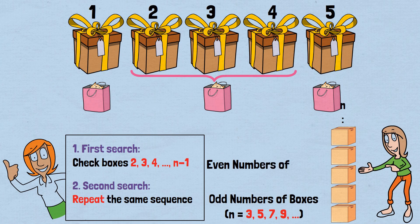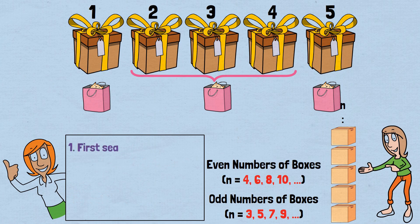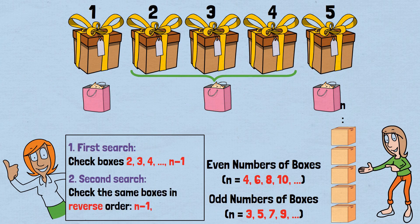For even numbers of boxes, n equals 4, 6, 8, 10, the strategy requires a subtle modification. 1. First search: Check boxes 2, 3, 4, up to n minus 1, all middle boxes in order. 2. Second search: Check the same boxes in reverse order, n minus 1, n minus 2, 3, 2.